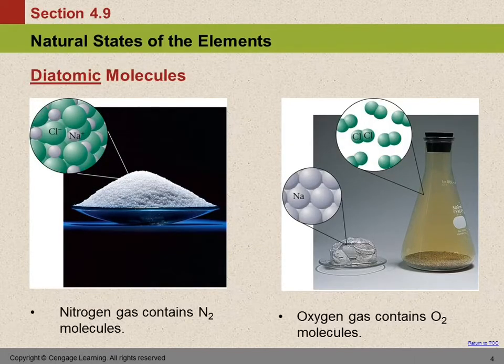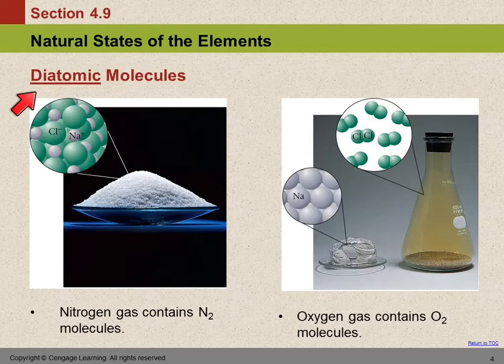Some of the elements are naturally present as diatomic elements. So diatomic. Di is a prefix that means two. Atomic refers to atoms. So diatomic molecules have two atoms. So some of the elements are found as diatomic molecules. And we have some pictures here.